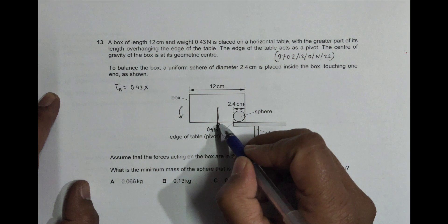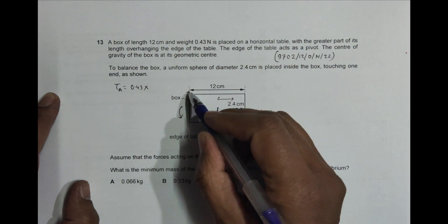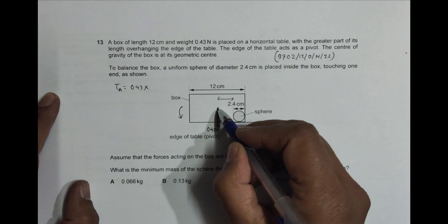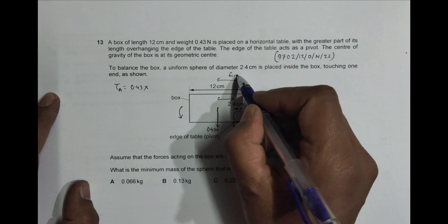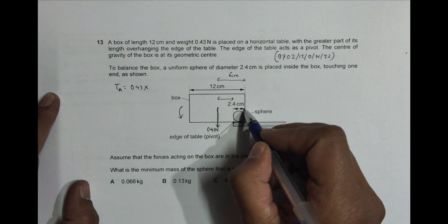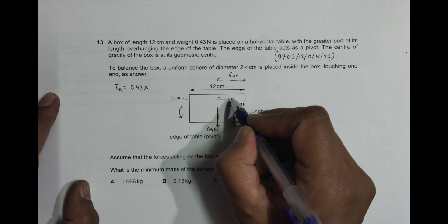Which is this much, so this distance should be somewhat like this. This is 12, this at the center, so this whole thing should be 6 centimeters. And this is 2.4 centimeters, so this thing should be 6 minus 2.4, which equals 3.6. So this should be 3.6 centimeters.